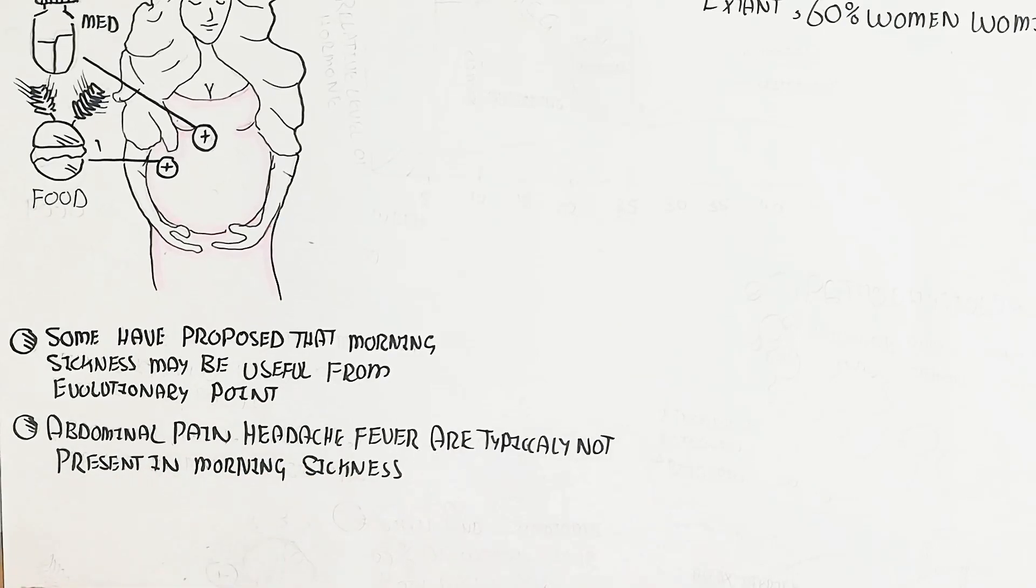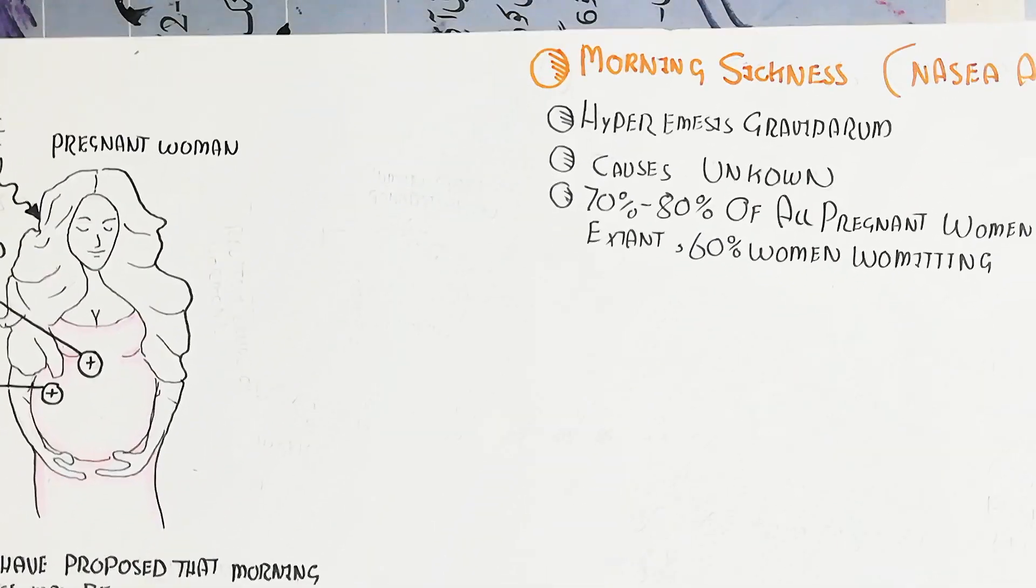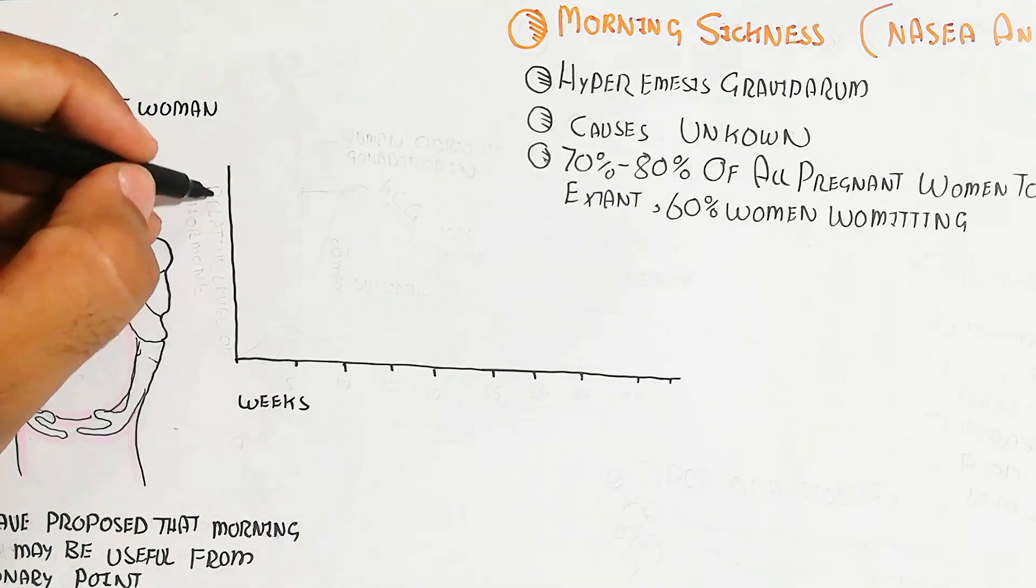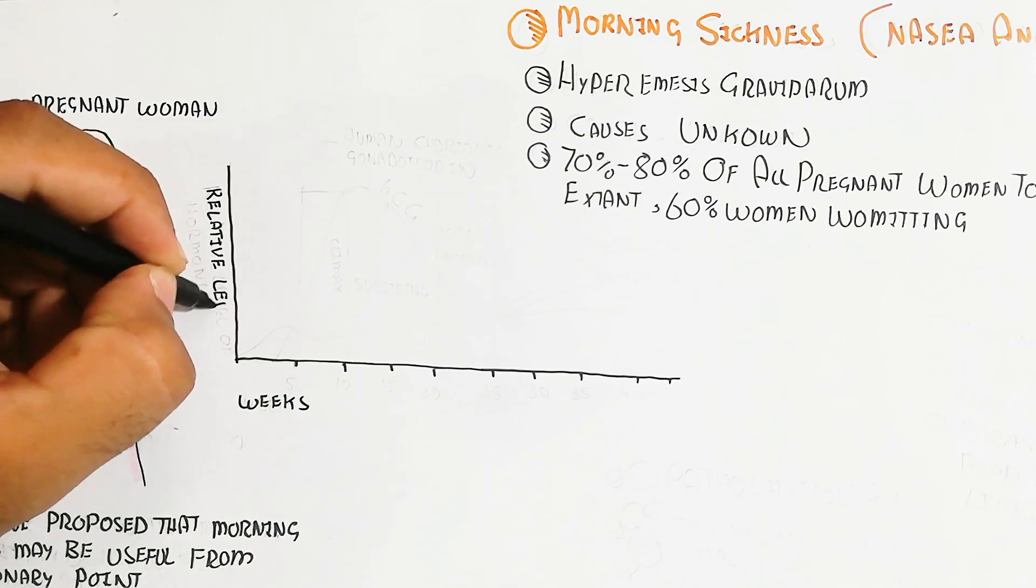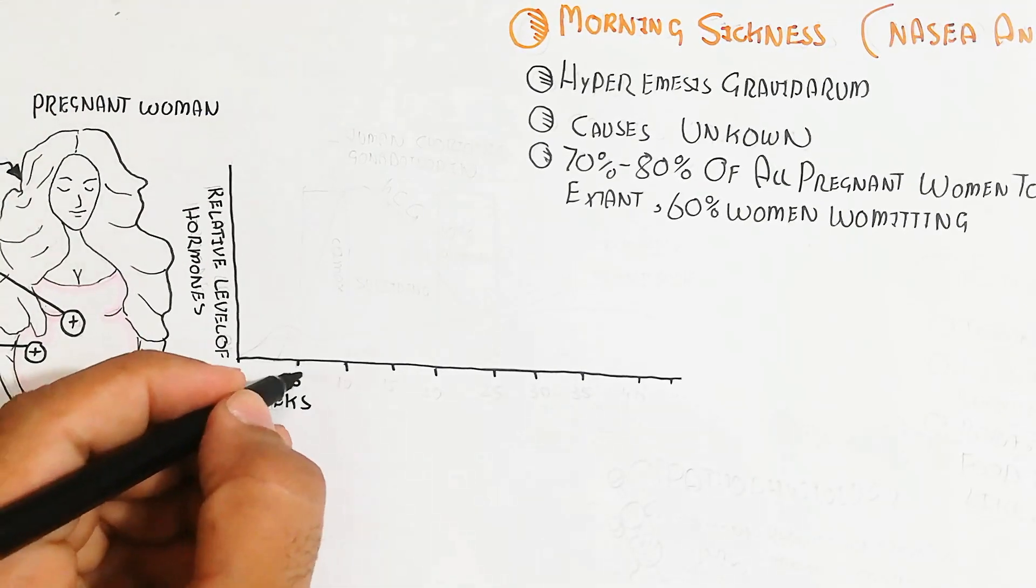Let's understand about morning sickness through a graph. The hormonal changes lead to morning sickness. The horizontal axis shows the weeks of pregnancy while the vertical axis shows the relative level of hormones.